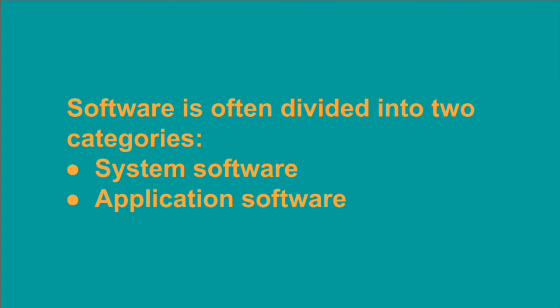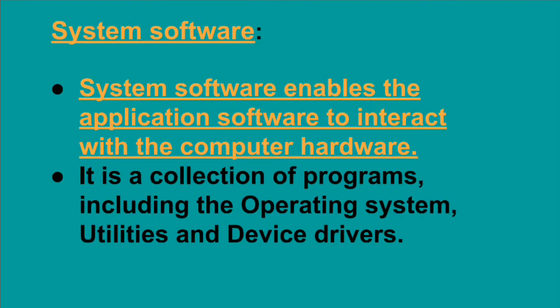Software is divided into two categories: system software and application software. System software enables the application software to interact with the computer hardware. System software has full control over both the application software and the hardware. It is a collection of programs including the operating system, utilities, and device drivers.